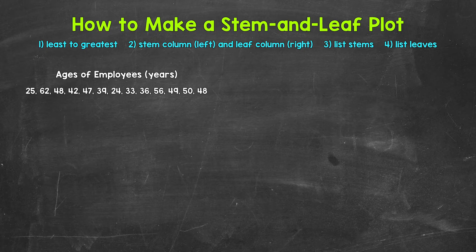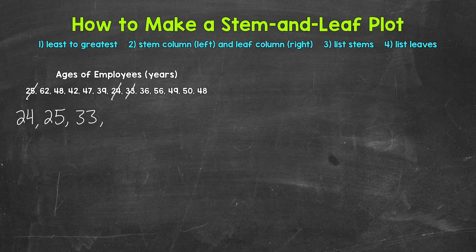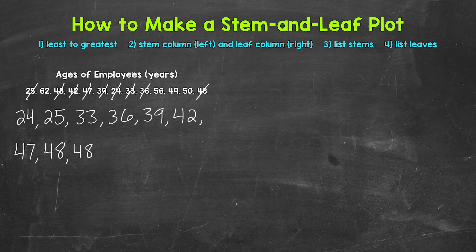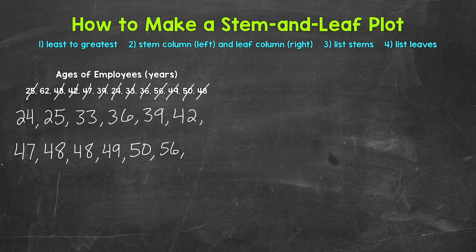Let's start with the youngest age of 24. So 24, then we have 25, then 33, 36, 39, 42, then 47. Then we have 48 and 48 — we have two 48s — then 49, 50, 56, and then 62.